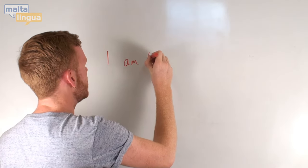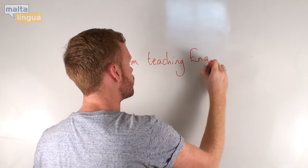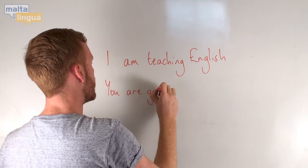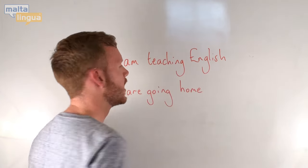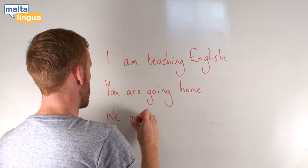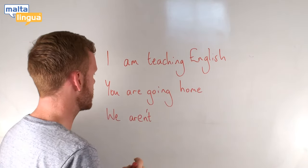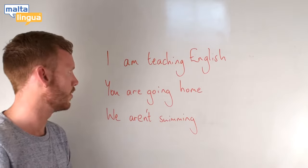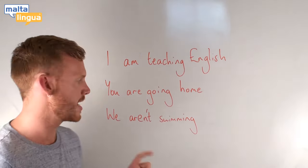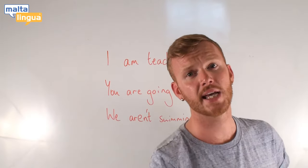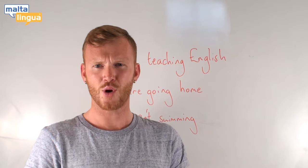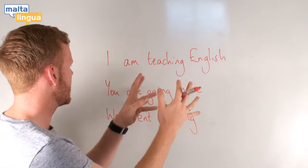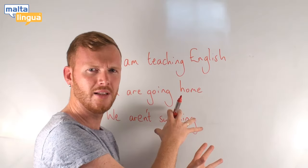I am teaching English. You are going home. We aren't swimming. Three examples of present continuous sentences. So, how can I possibly use these to describe a future action? Do I add 'going to' somewhere? Or, do I add 'will'? No.